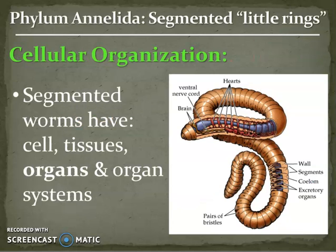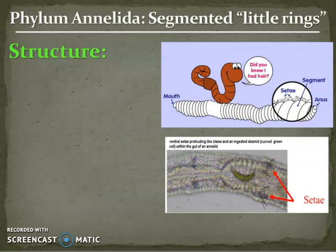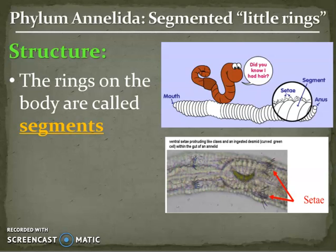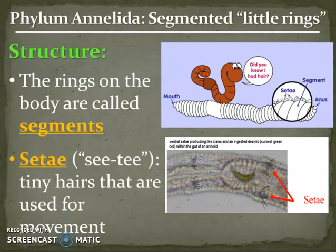They have cells, tissues, organs, and organ systems. Let's talk about their structure, because we will be doing our earthworm dissection. They have segments - those are the little rings in their body - and on each one of these segments is a setae, or a tiny hair that is used for movement. You can see in the picture these tiny little hairs coming off the side of the segment. They help the worm wiggle through their environment.